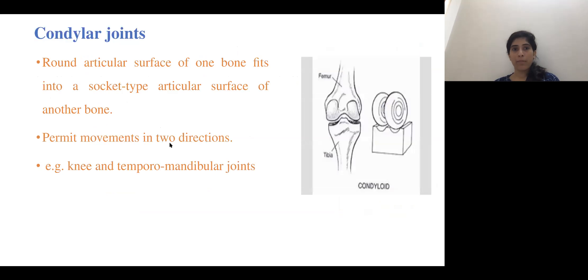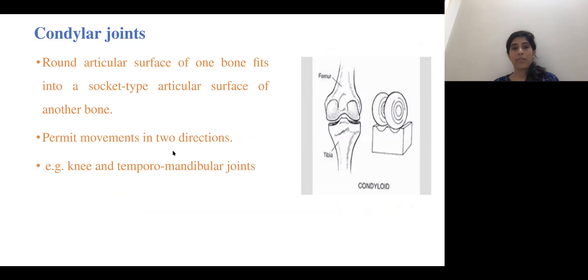In the condylar type of joint, the round articulating surface of one bone fits into the socket-type articulating surface of another bone, and it permits two-directional movement. The knee joint is an example, where both articulating surfaces are rounded, providing two-plane motion.